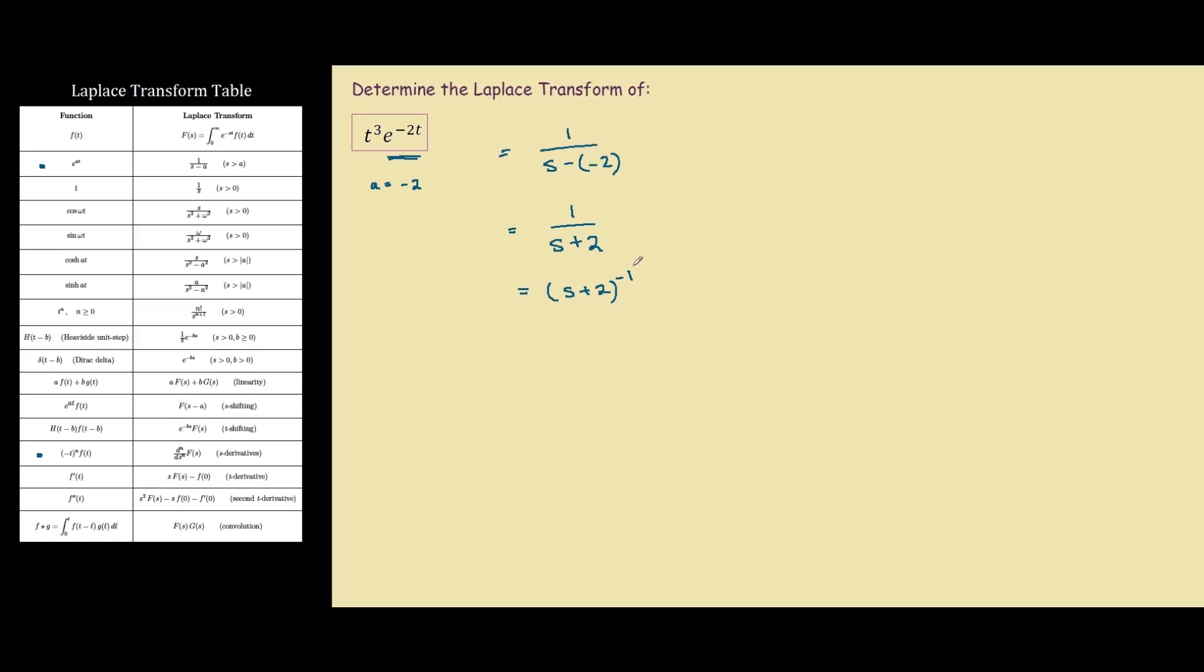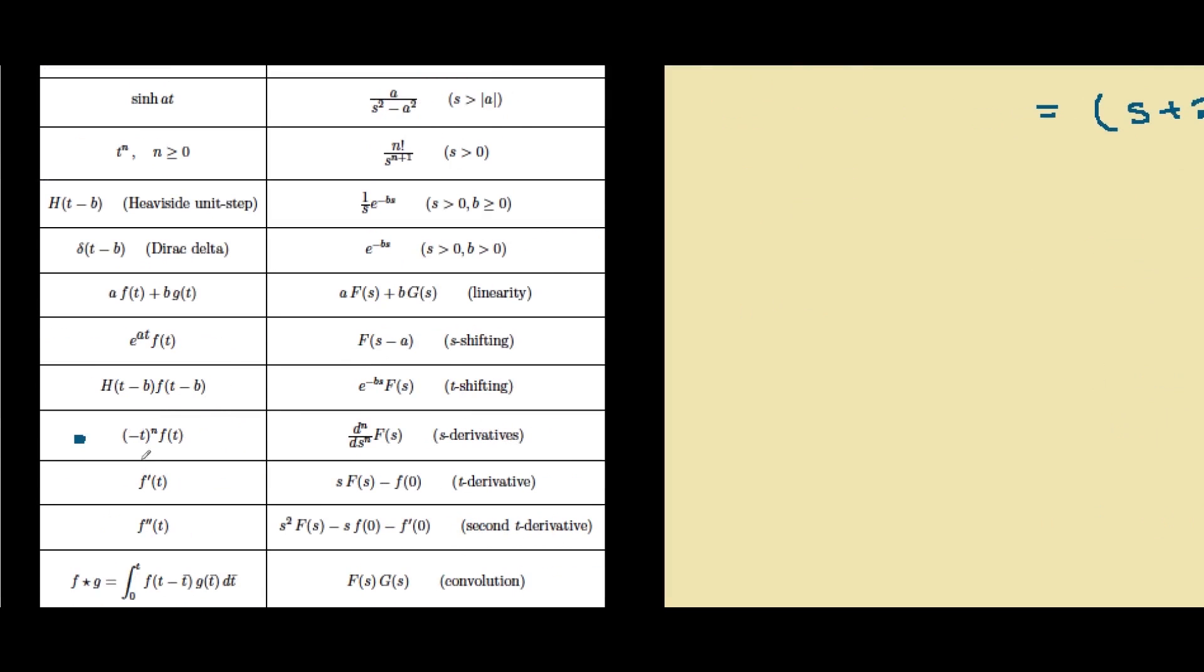However, our question is not as simple as that; we have a t cubed to worry about. So looking at our Laplace transform table, our function is very similar to this, negative t to the power of n times f of t, where n is the power.